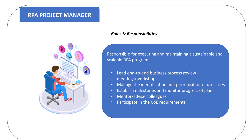We will now look into the RPA Project Manager roles and responsibilities. The process automation project manager is responsible for executing and maintaining a sustainable and scalable RPA program and roadmap by interacting with all levels of staff to create awareness of the intelligence technology and build a pipeline of candidate processes to be automated. Specifically, they lead end-to-end business process review meetings or workshops to generate awareness of RPA capabilities, document current process pain points, identify opportunities for automation, and manage the identification and prioritization of use cases, sustaining a healthy opportunity pipeline.